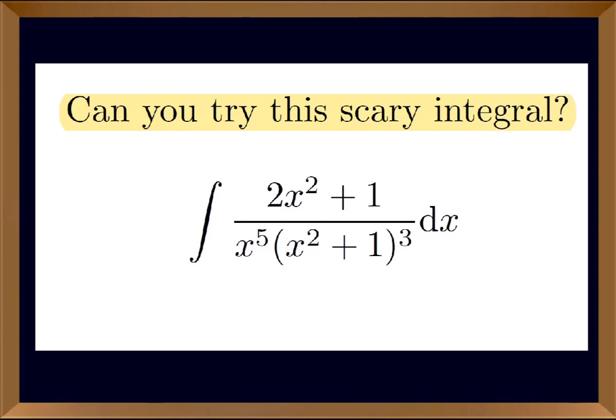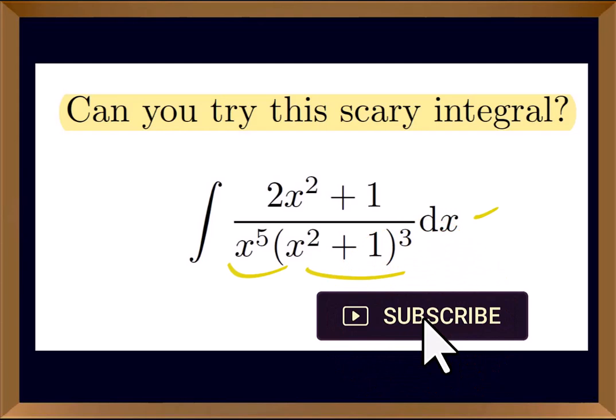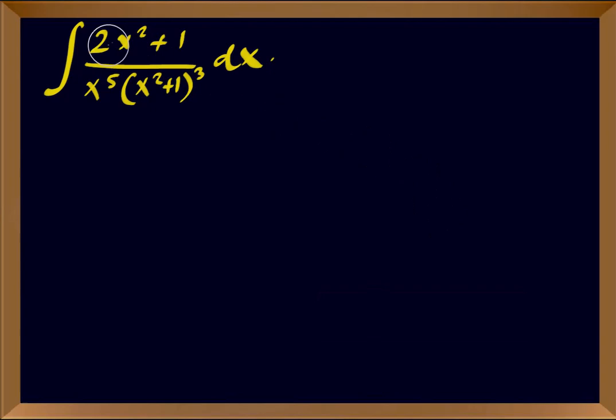Welcome to this channel. Today we have a very complicated integral — seemingly it is the integral of (2x² + 1) over the quantity x⁵ times (x² + 1)³ dx. Before we attack this integral, we have to be very careful to make sure that we do not have complicated calculations. So I'm going to rewrite it on the next screen and we are going to analyze this.